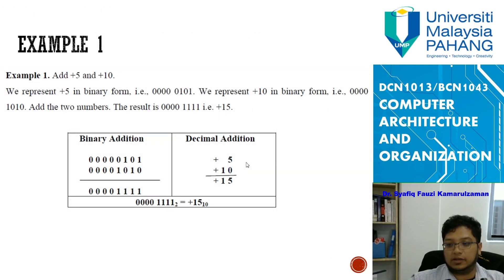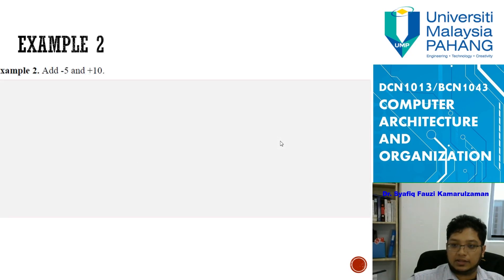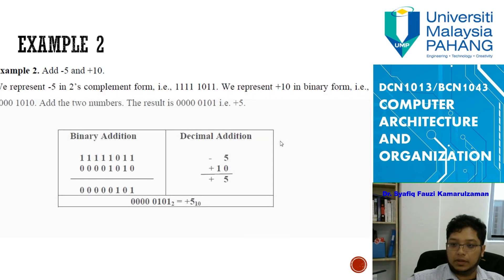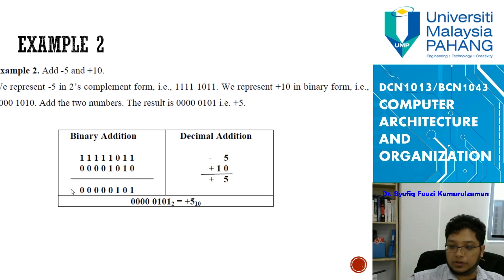Worked example: adding 5 and 10. Five in binary plus ten in binary gives fifteen as the total. For negative 5 plus positive 10: negative 5 in two's complement binary plus positive 10 gives positive 5. When adding, one plus one equals zero carry one, one plus one is zero carry one, one plus zero plus zero is one, then one plus zero plus zero is one — there is an overflow bit of one, which is ignored, and the answer correctly shows positive five.